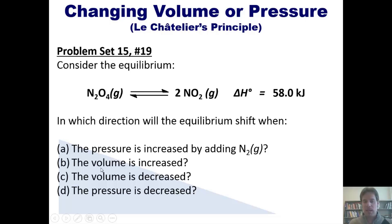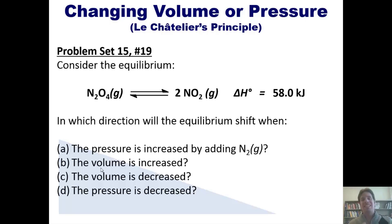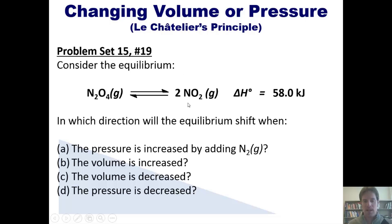In scenario B, what happens if the volume is increased? You increase the volume, you decrease the pressure. In an equilibrium scenario, you want to get back to how things were, so you want to increase the pressure. You do that by increasing the number of gas molecules — shifting in whichever direction increases the total number of moles of gas. With one mole of gas on the left and two moles of gas on the right, in scenario B the equilibrium will shift to the right. I'll let you tackle options C and D on your own.